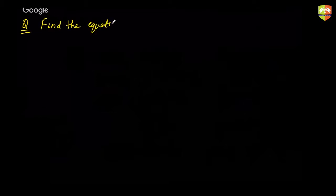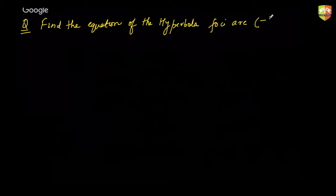Find the equation of the hyperbola whose foci are at (-4, 4) and (6, 4), and eccentricity is 2.